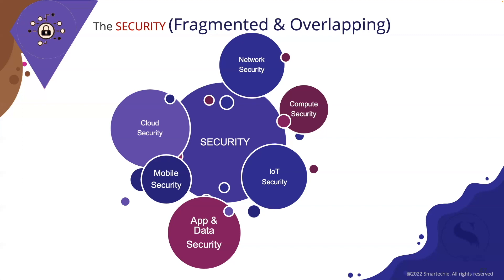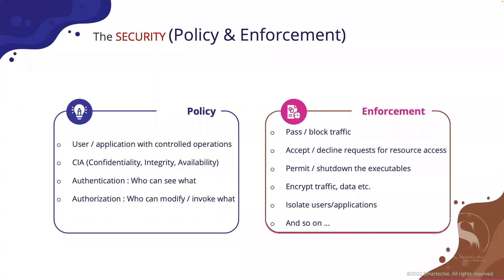At the compute layer itself, there might be factors that compromise the privacy of data. There are multiple ways where policies can be created and enforced to ensure maximum security. Some of the key policies include: user application control operations; applying confidentiality, integrity, and availability of the system; applying authentication services that define who can see what kind of resources; and authorization, which defines who can modify or invoke the data.